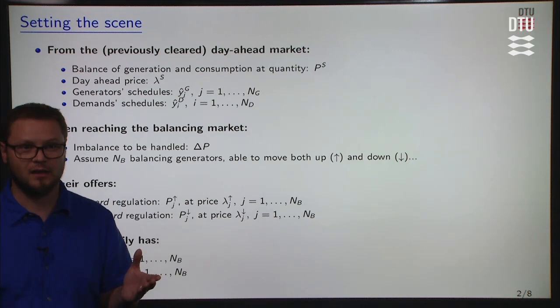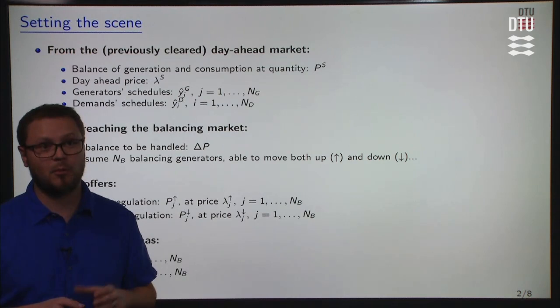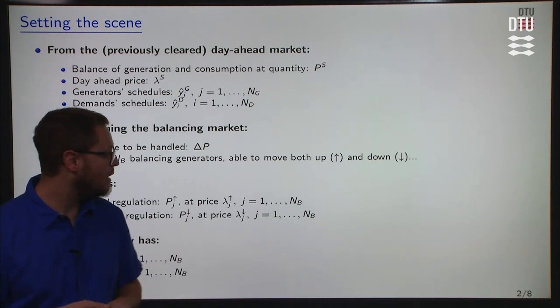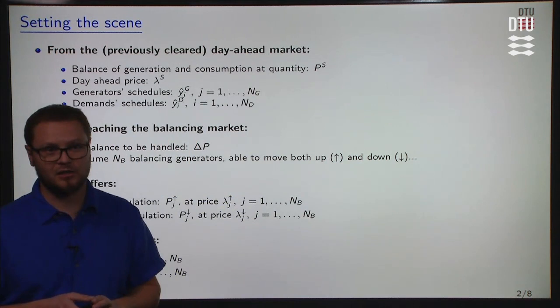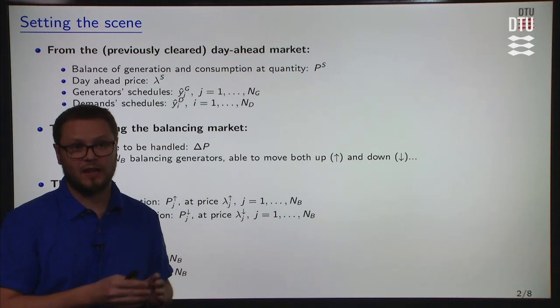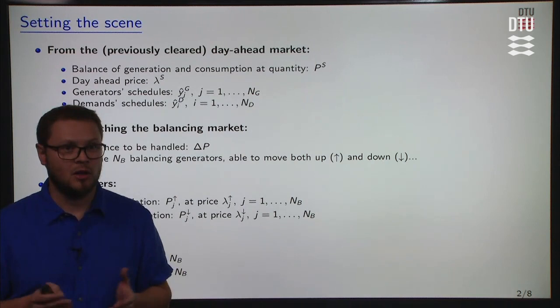We assume that NB balancing generators are ready to help the system, either by entering the system or by changing their set point or their original schedules from the day-ahead market clearing. These balancing generators may be able to move both up and down. In practice this may not be mandatory — you may offer only to support the system on one side: to have extra generation or to lower your generation. Similarly on the demand side you could offer to increase or lower consumption, but not necessarily both.